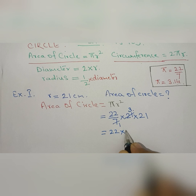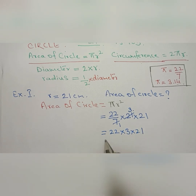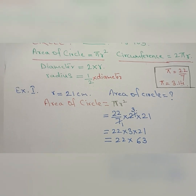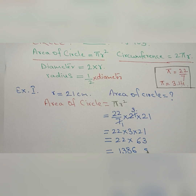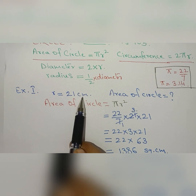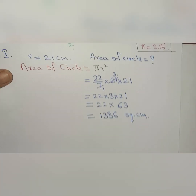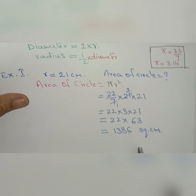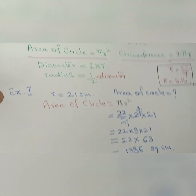22 into 3 into 21 equals 22 into 3 into 3 into 6. Multiplying this, the result is 1386. Since this is area, the unit will be square centimeters, because the radius was given in centimeters. So the area is 1386 square cm. This first solved example is now complete.